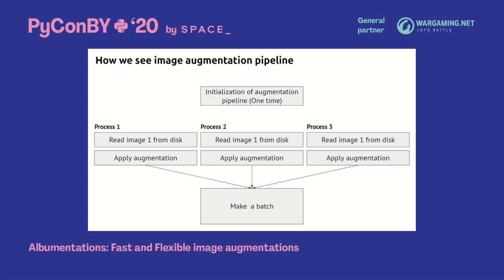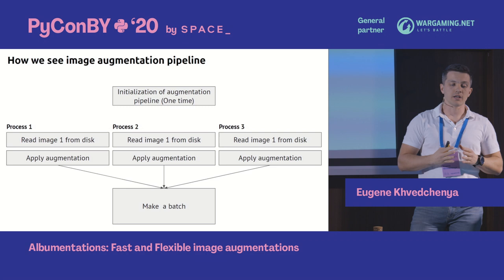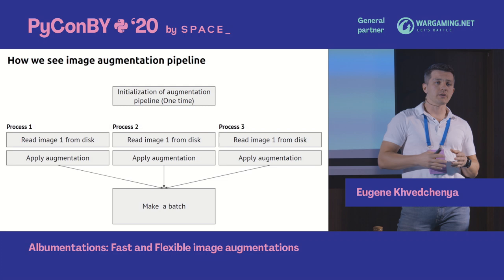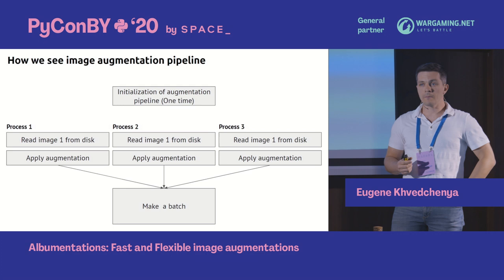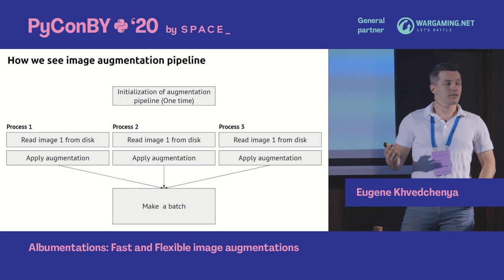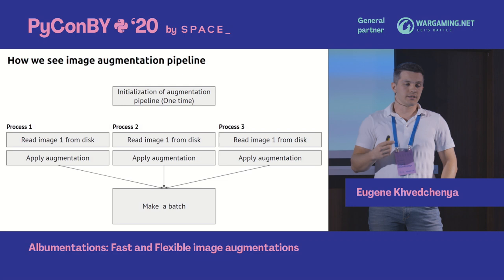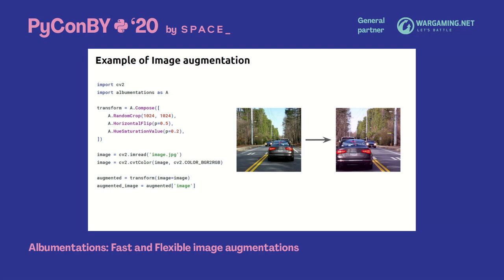How do we envision the augmentation pipeline working most efficiently? During the start of the training loop, we initialize our augmentation pipeline — a one-time job where we define the order of augmentations to apply to each image sample. During training, in multiple processes, we read an image from disk, augment it with a randomly generated set of transformations, and then make a batch for training. It's as simple as that.